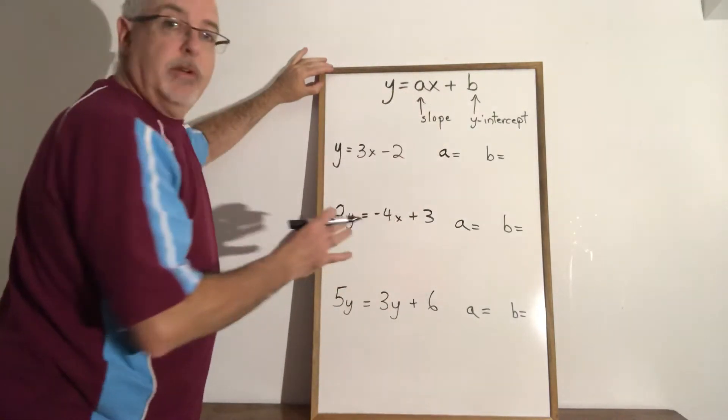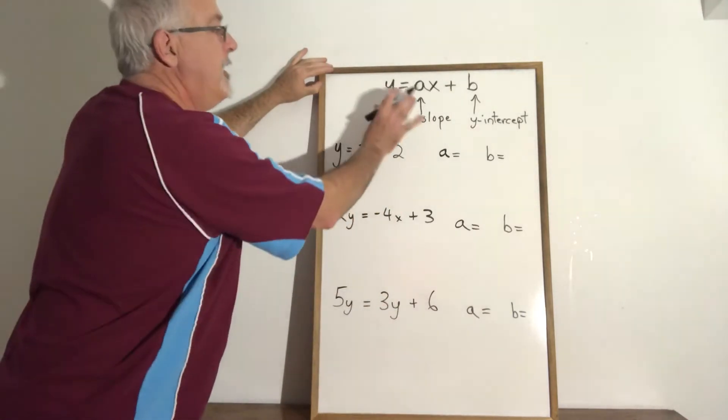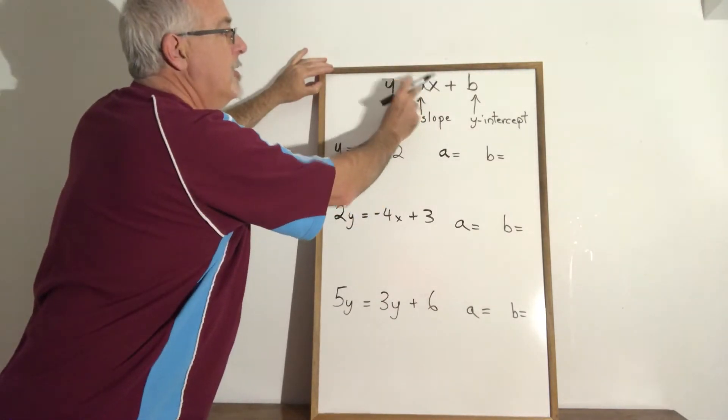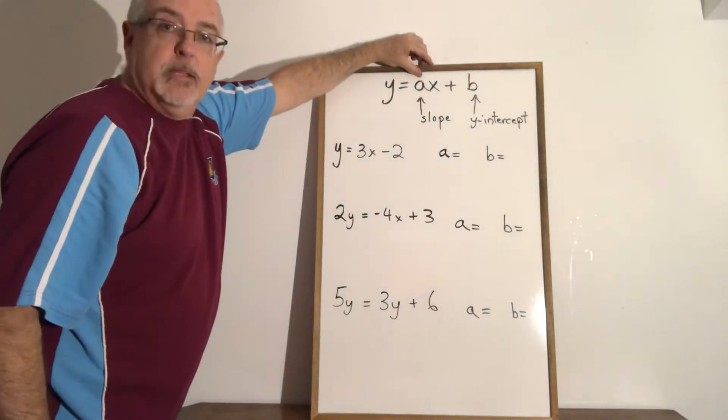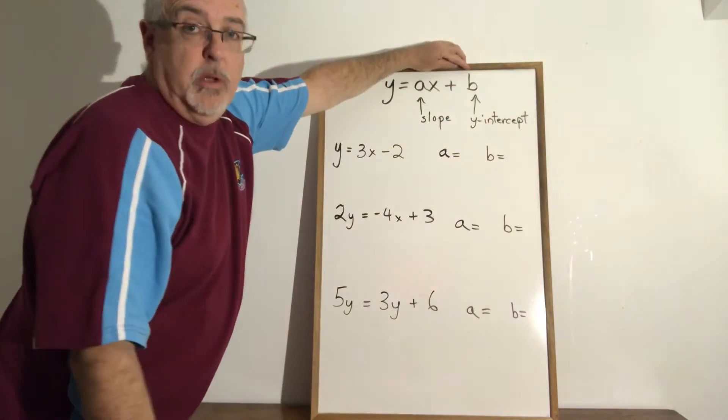y equals ax plus b is very useful in more than one way, but one of the ways it's useful is if we get our equation written in this form we can see that the numerical coefficient of x has to be our slope and the constant term, the b, is our y-intercept.